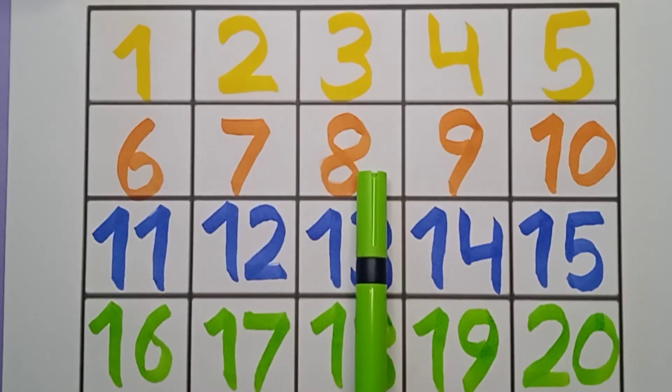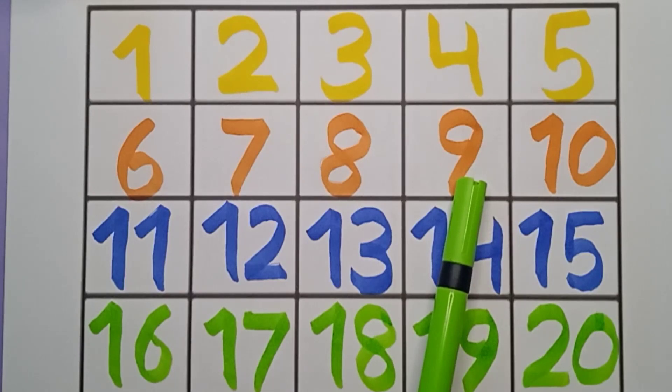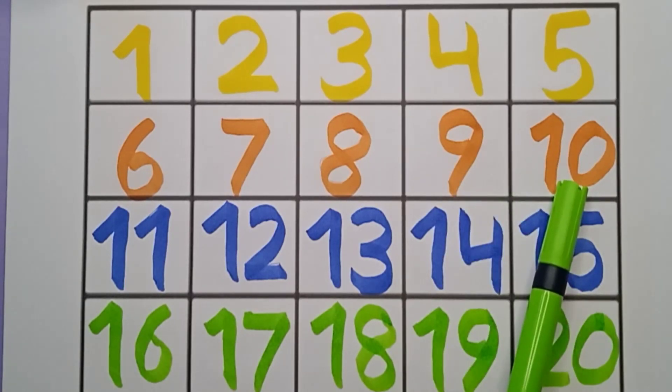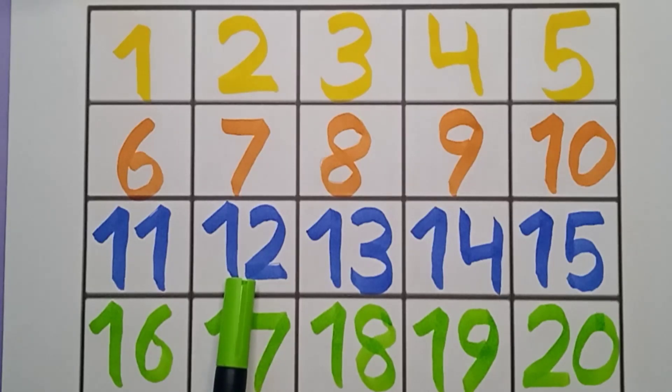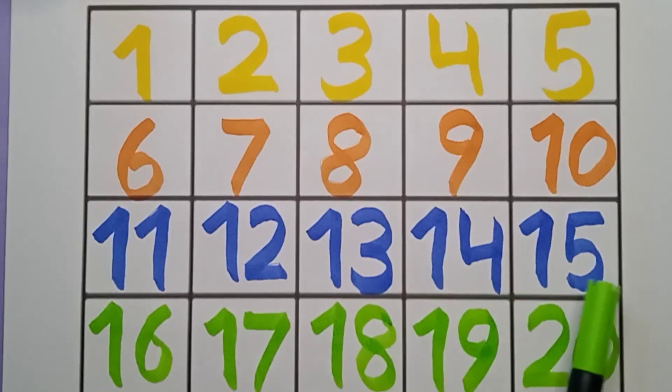One, two, four, six, seven, eight, nine, ten, ten, eleven, eleven, twelve, twelve, thirteen, fourteen, fourteen, fifteen, sixteen, seventeen, seventeen, eighteen, nineteen, and twenty, twenty.